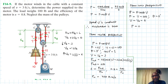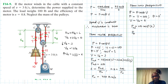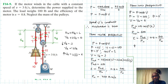Therefore, power out equals 100 times cosine 0 degrees times 6, which equals 600 ft·lb/s. Using the efficiency formula, efficiency equals power out divided by power in, so 0.8 equals 600 divided by power in. Power in is again equal to 750 ft·lb/s — the same value as before.